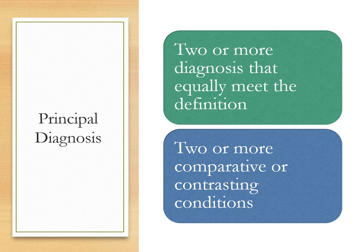Next up: two or more comparative or contrasting diagnoses. Here the provider is saying something like 'either/or this condition.' They are coded as if confirmed, and we sequence the diagnosis — meaning which one goes first — according to the circumstances of the admission.